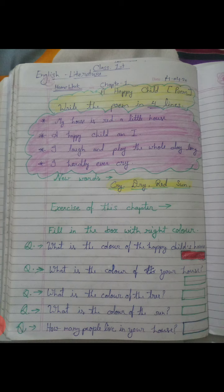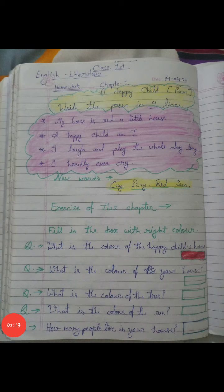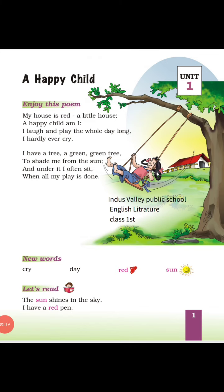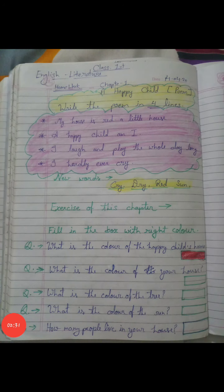Now look here. Some exercise of this chapter. Fill in the box with the right color. You can read this question: What is the color of the happy child's house? Look here — what is the color of this girl's house? Yes, of course, it is red.